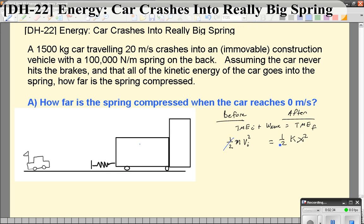It's nice that the halves cancel out, it makes life easier. When I solve for x, we're going to get m over k v_i squared equals x squared, or x equals the square root of m over k v_i squared, or breaking that apart, the square root of m over k times v.